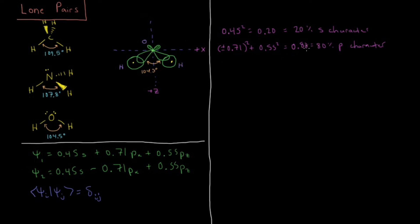So using this type of construct, then we can define something calling the spn character. So spn, we have some spn orbital, where we can now generalize this to where n doesn't necessarily have to be an integer, where we can say n is the percent p divided by percent s. So for example, in water,